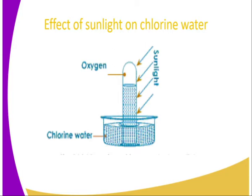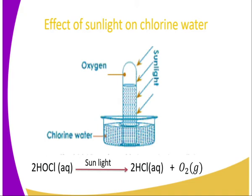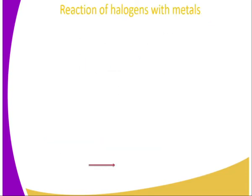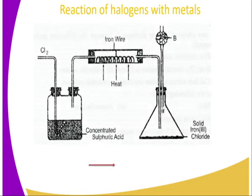When chlorine water is exposed to sunlight, a gas is liberated — and that gas is oxygen, not chlorine, so do not confuse between the two. The equation for the reaction is: 2HOCl (aq) → 2HCl + O₂ (g). This tells us that the acidity of chlorine water increases, since it is converted from hypochlorous acid to hydrochloric acid, which is more concentrated.